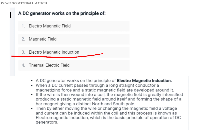That is a bar magnet shape — from north to south. Then by either moving the wire or changing the magnetic field, voltage and current is induced. Electromagnetic Induction: whenever a conductor is placed in a magnetic field, an EMF is induced. The principle of a DC generator is Electromagnetic Induction.